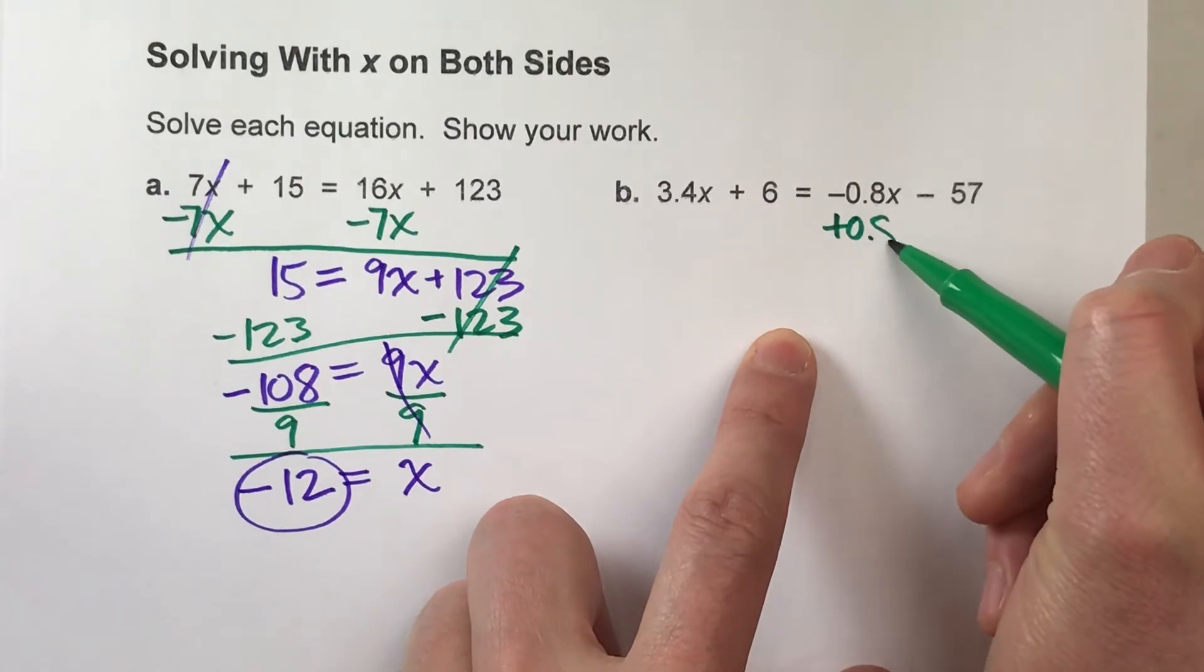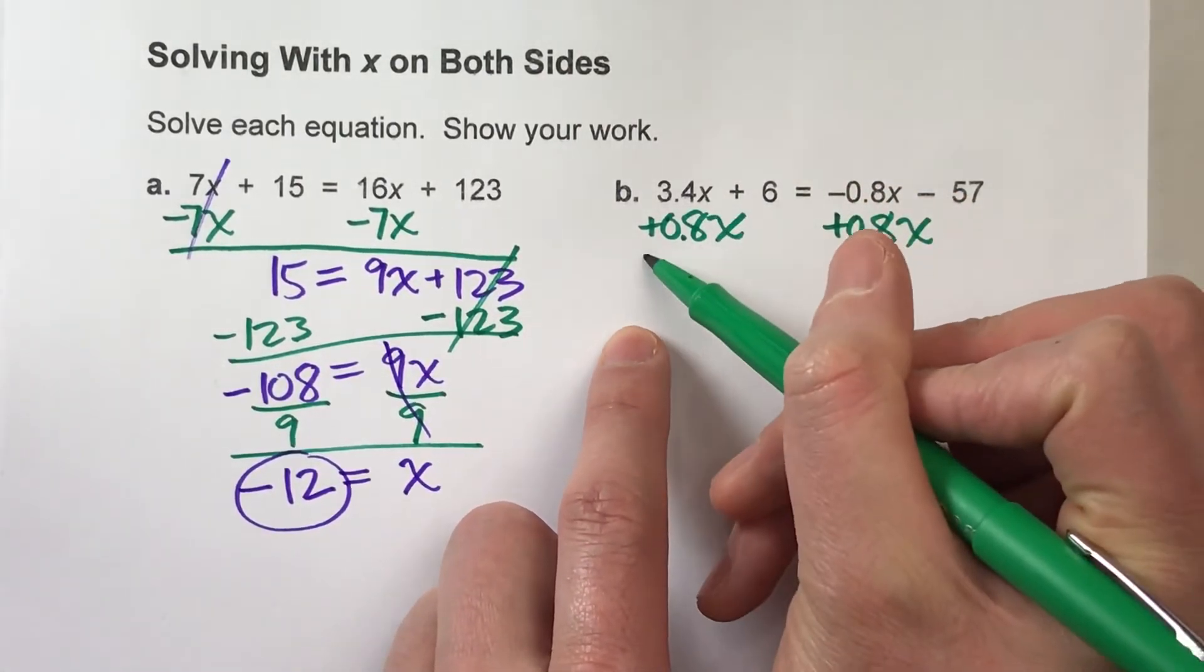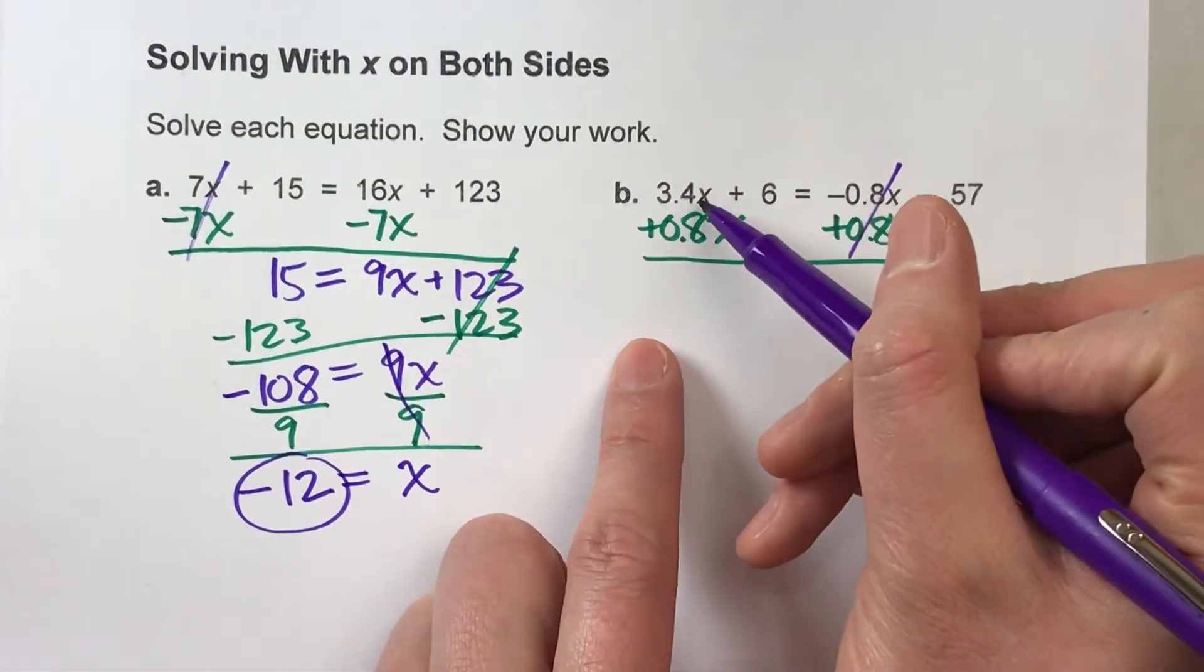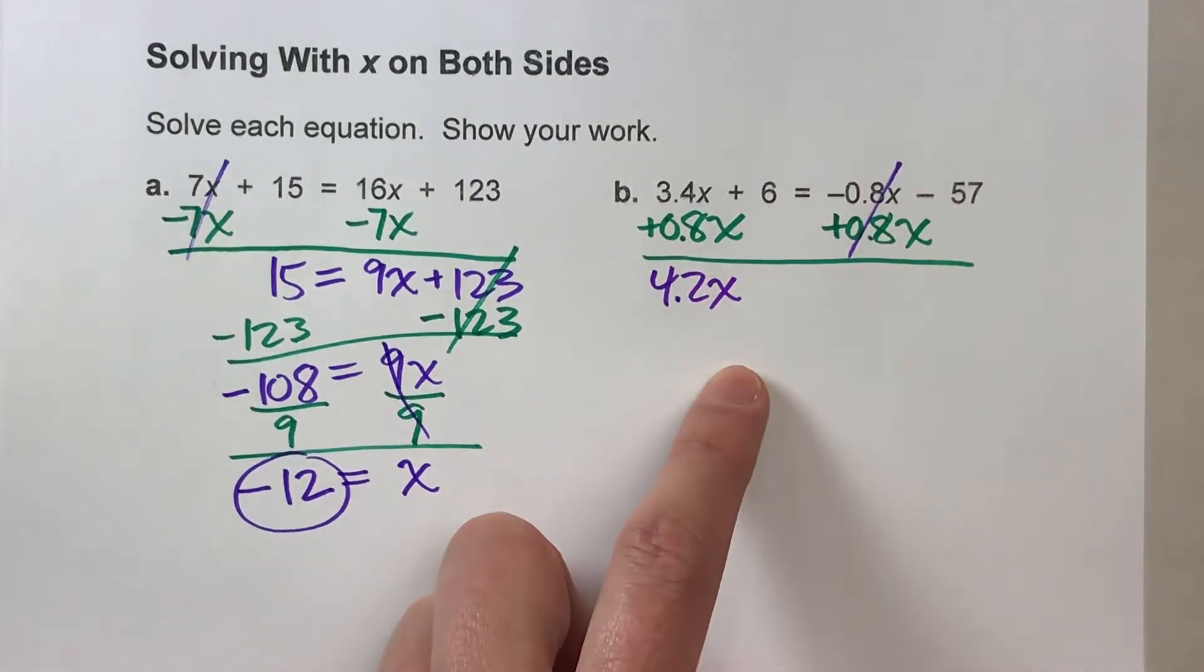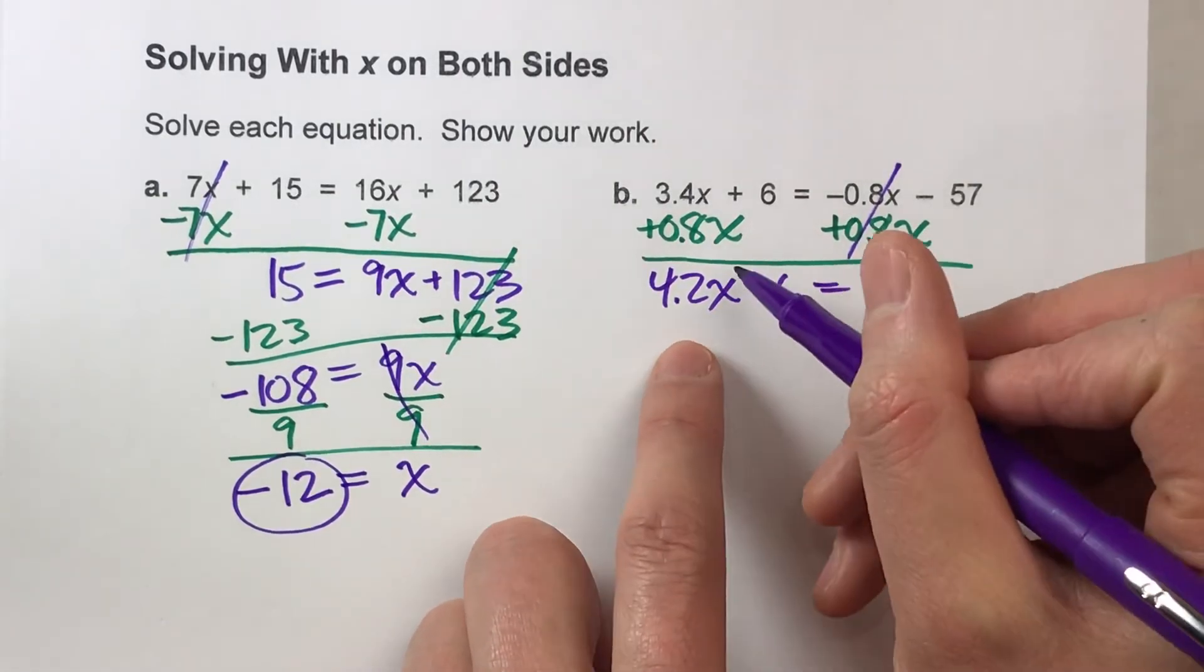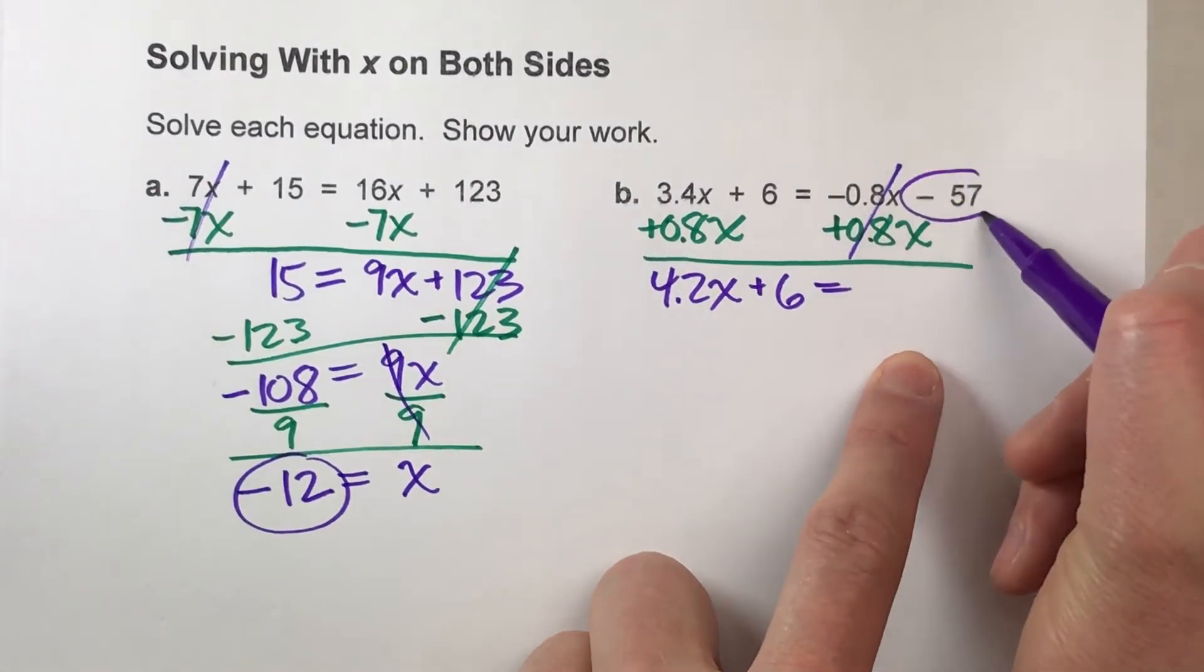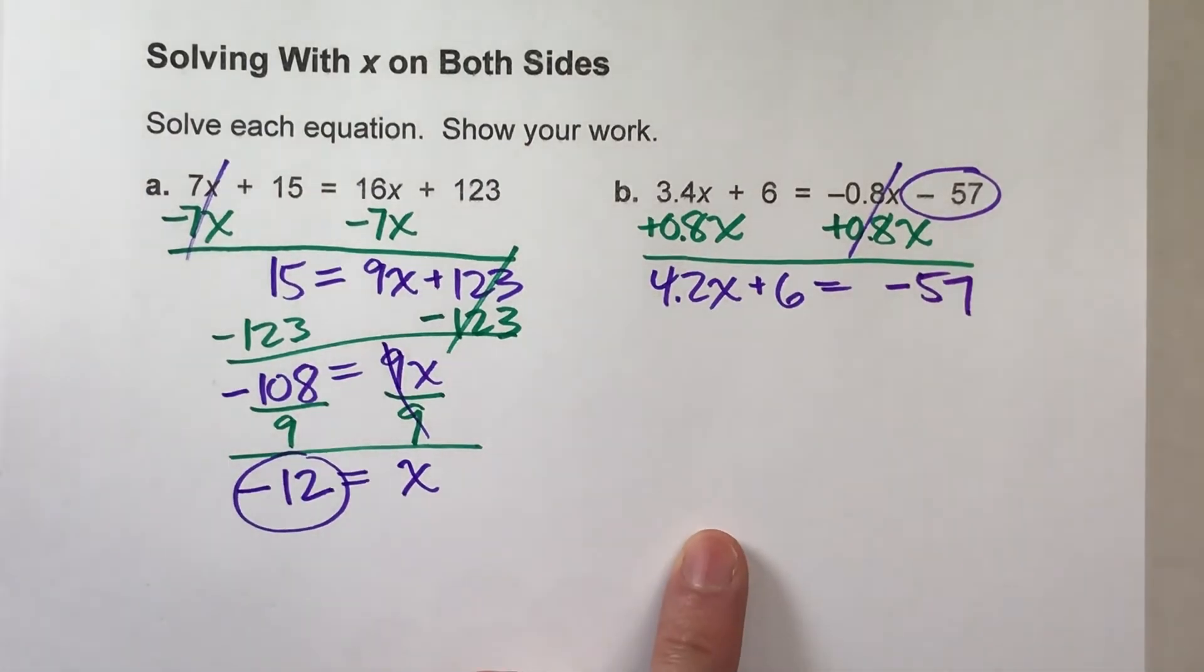And when I do that, notice I end up with a positive amount of x's. 3.4x plus 0.8x is positive 4.2x. See, technically, it doesn't matter which route you take, you will still get the same answer. But this way, I end up with positive numbers instead of negatives. Be careful when you drop down here. You've got a minus 57 there, so negative 57 drops down there.